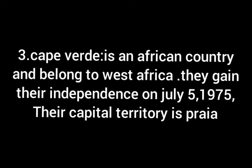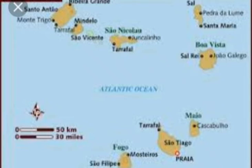Number 3, Cape Verde. Cape Verde is an African country and belonged to West Africa. They gained their independence on July 5, 1975. Their president is Jorge Carlos Fonseca. This is the currency of their country, flag, and map. Their capital territory is Praia.